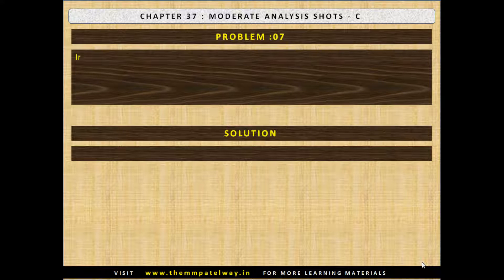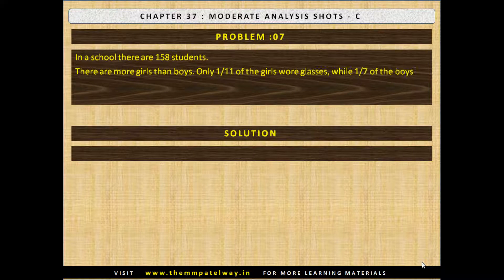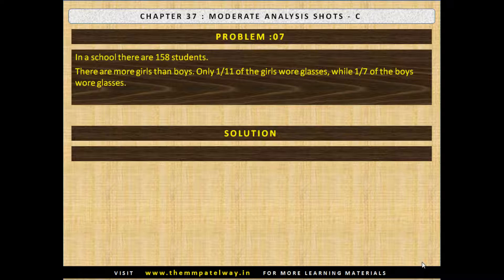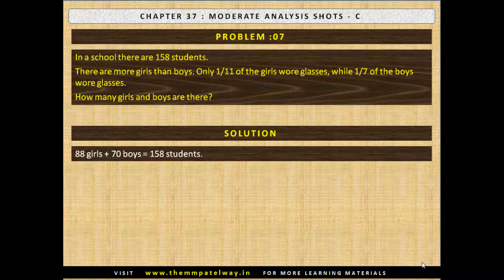Problem No. 7. In a school there are 158 students. There are more girls than boys. Only one eleventh of the girls wore glasses while one seventh of the boys wore glasses. How many girls and boys are there? The solution is there are 88 girls and 70 boys. The number of girls must be a multiple of 11 and boys a multiple of 7.